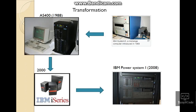Just to give some background: during 1969 IBM had a system called System 3, and then during 1988, System 38 and System 34 were combined to form a system called Application System 400, otherwise called AS/400. AS/400 has evolved with the latest technology, and after being named as i-Series, it's now called IBM Power System or IBM i from 2008.